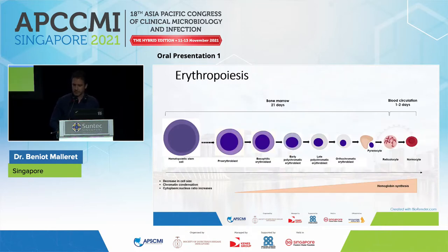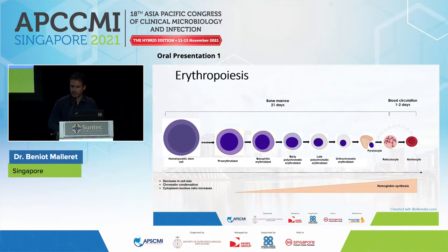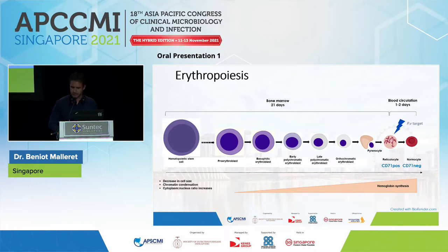I will explain the difference between these two populations of red blood cells. During the development of red blood cells in the bone marrow, at the end of erythropoiesis, enucleation of the erythroblast leads to the formation of reticulocytes, which can be infected by Plasmodium vivax. This population of red blood cells is CD71-positive, or transferrin receptor-positive.